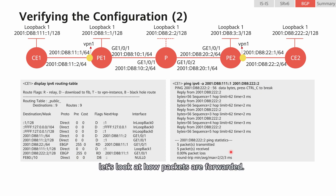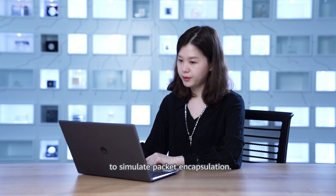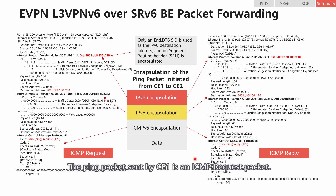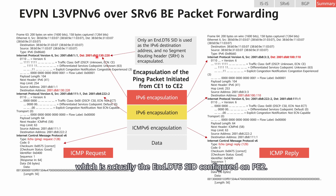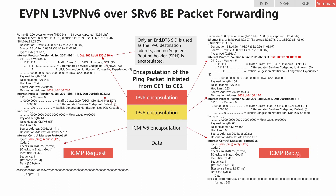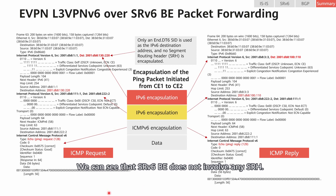In this example, a ping operation is initiated from C1 to C2 to simulate packet encapsulation. The ping packet sent by C1 is an ICMP request packet. C1 performs common IPv6 encapsulation for the packet. After receiving the packet, P1 performs SRV6 encapsulation, encapsulating the post-recursion next-hop, which is actually the End.DT6 SID configured on P2. The information on the right shows a reply packet sent by C2. After receiving the packet, P2 performs SRV6 BE encapsulation, encapsulating only a service SID — an End.DT6 SID. We can see that SRV6 BE does not involve any SRH.